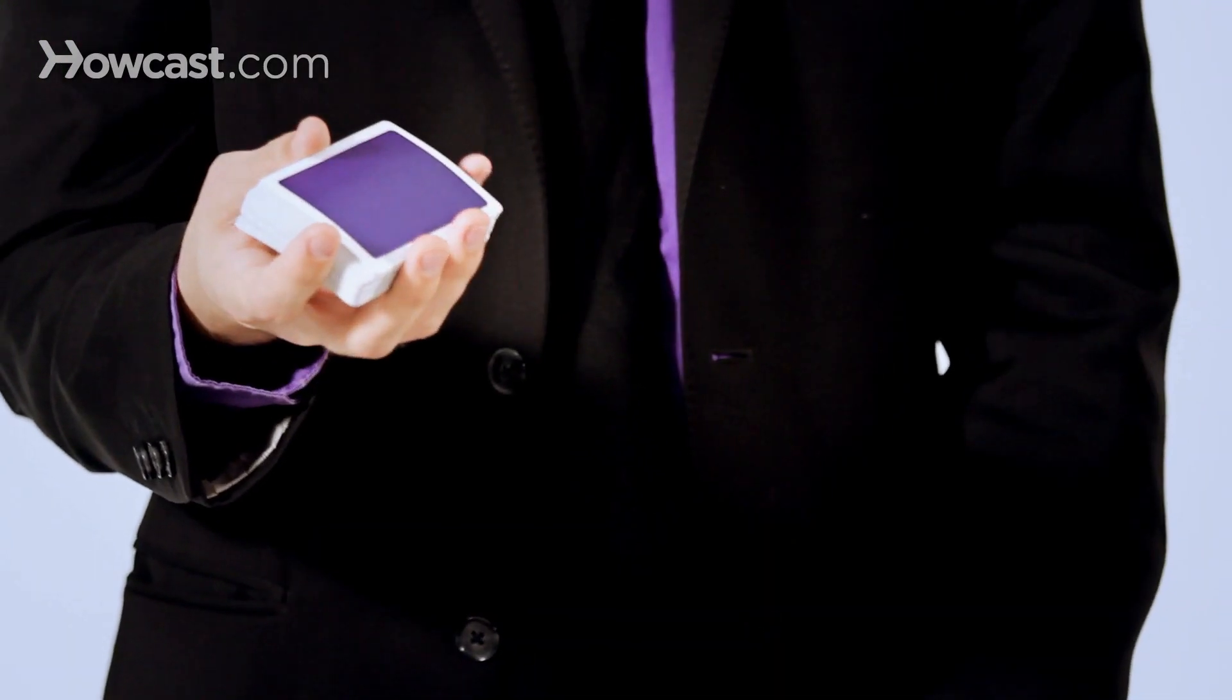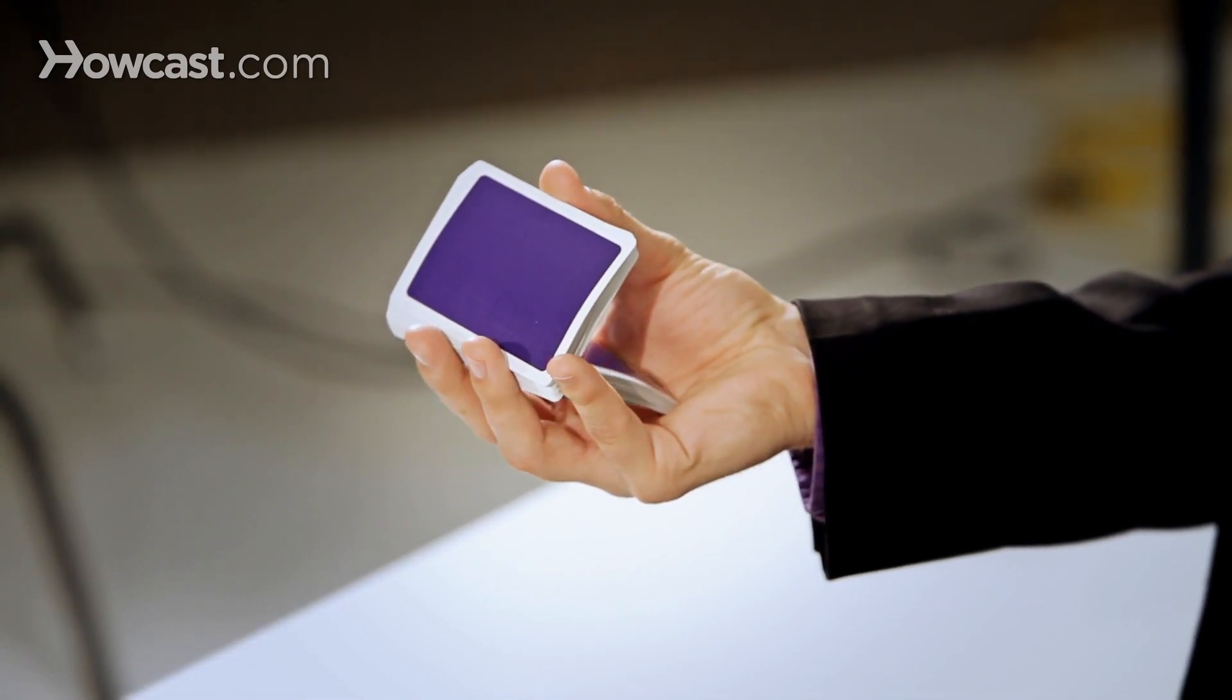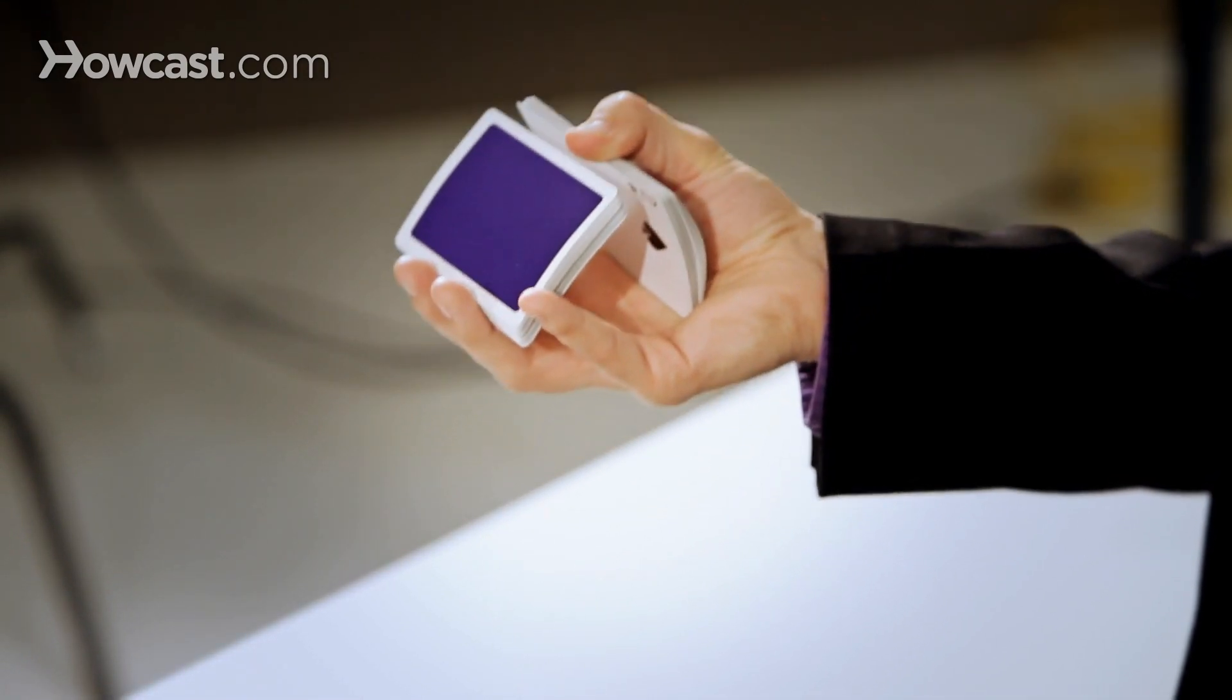This is based off the charlier cut and the triple cut, so you should learn those first. But what you're going to do is allow a small packet, about a third to a quarter of the deck to fall. You're going to kick that beyond your thumb, grip it, and then allow this packet to fall.